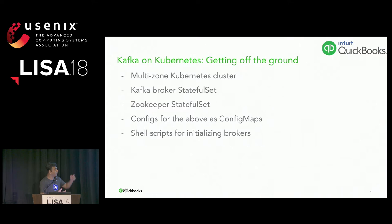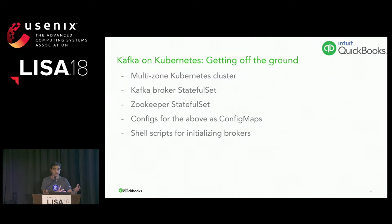We found this repo and it was very much in line with what we wanted. If we could set up a multi-zone Kubernetes cluster, that repo gave us Kafka brokers as one stateful set, Zookeeper as one stateful set, configuration as config maps, and a nice customizable shell script instead of just running the Kafka broker jar. Along the way, since it was open source, we found some issues, contributed back with issues, code, and suggestions, and answered questions others had.